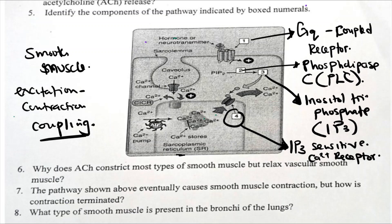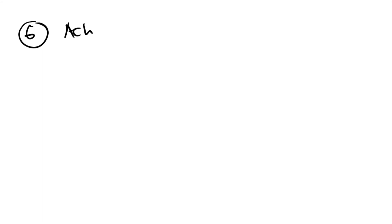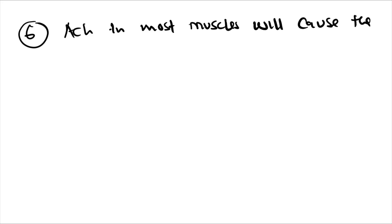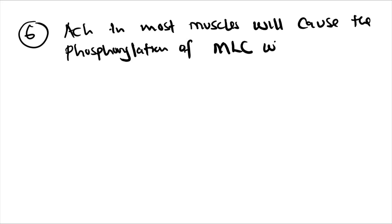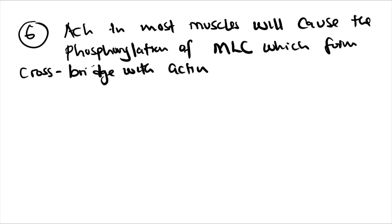Number six: why does acetylcholine constrict most types of smooth muscle but relax vascular muscle? In most smooth muscles, acetylcholine causes phosphorylation of the myosin light chain, which forms cross bridges, causing contraction.